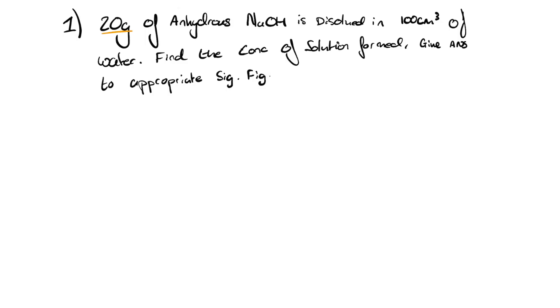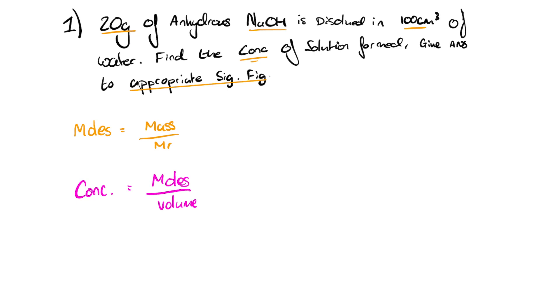Here is an exam-style question worth one or two marks. We have 20 grams of anhydrous sodium hydroxide dissolved in 100 cm³ of water, and we need to find the concentration of the solution formed to an appropriate number of significant figures. Since concentration equals moles divided by volume, the first step is to find the moles of NaOH, then convert the volume, and finally calculate the concentration.